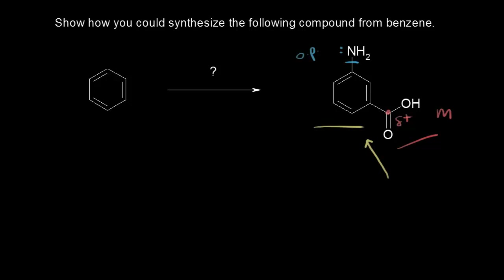We haven't covered any reactions that would install an amino group meta to a carboxylic acid group. But we have talked about how to put a nitro group meta to a carboxylic acid group. So let's turn that amino group into a nitro group. Drawing our benzene ring with a carboxylic acid and a nitro group instead of an amino group — all we need to do now is think about reducing our nitro group to our amino group.